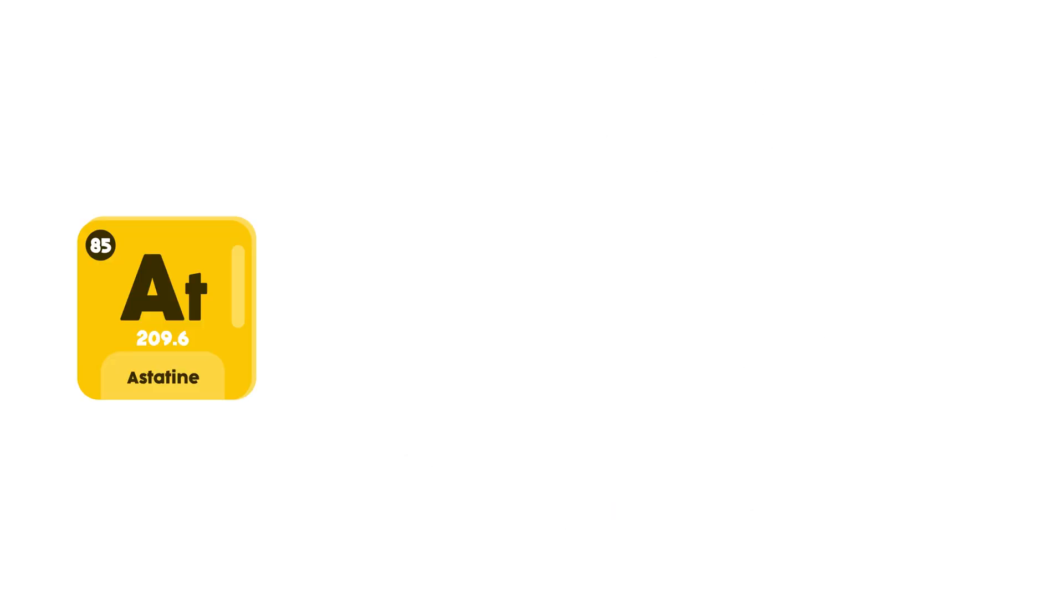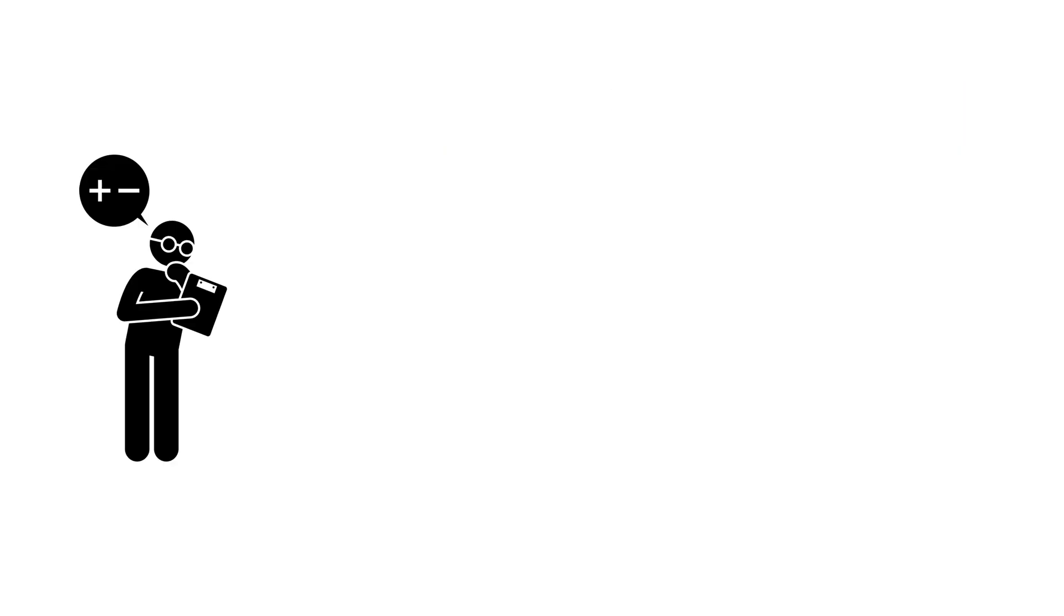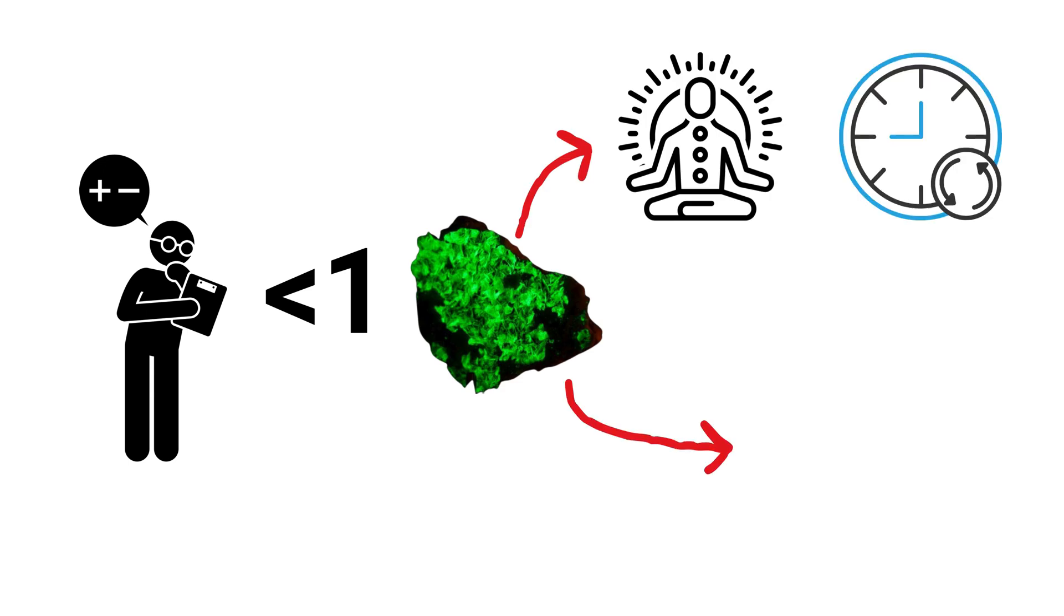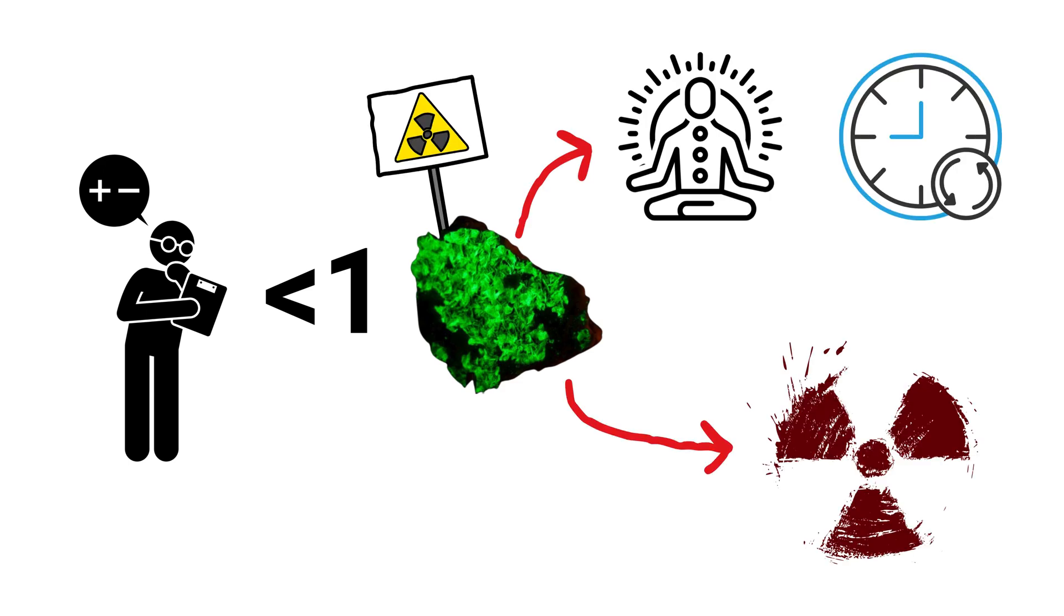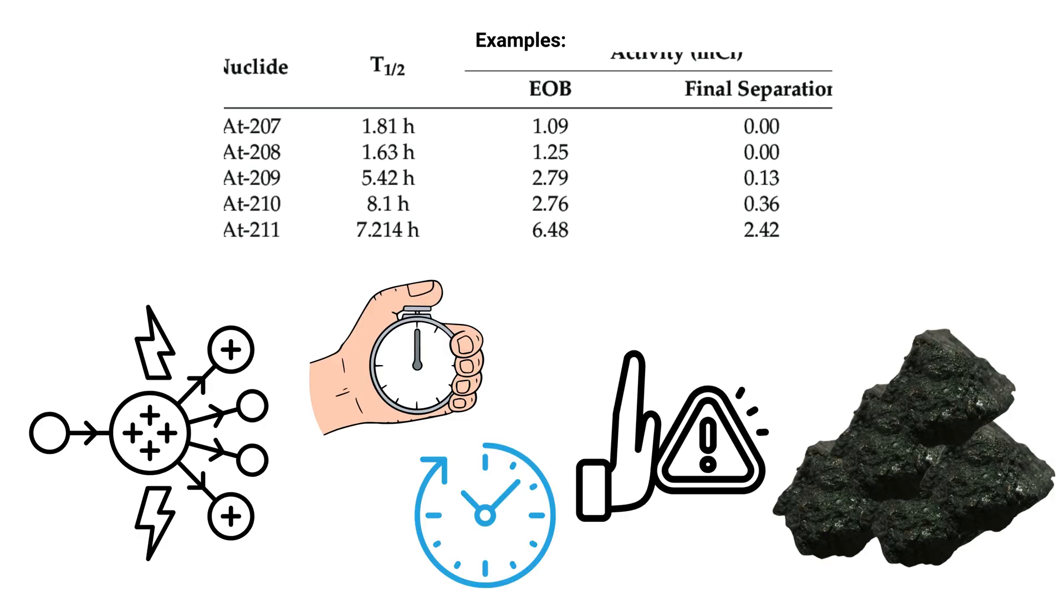Astatine. Astatine is the rarest naturally occurring element on Earth. It's estimated that less than one gram of astatine exists at any given time due to its extreme radioactivity. Its isotopes decay within minutes or hours, preventing any significant accumulation.